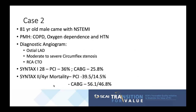Case two: an 81-year-old male with non-STEMI. Past medical history significant for COPD with oxygen dependence and hypertension. Diagnostic angiogram showed osteo-LAD stenosis, moderate-to-severe circumflex stenosis, and RCA CTO. Syntax 1 score was 28 with a PCI mortality of 36% and CABG mortality of 25.8%. Syntax 2 four-year mortality score for PCI was 39.5 with a 14.5% four-year mortality, while the Syntax 2 score for CABG was 56.1% with a four-year mortality of 46.8%.